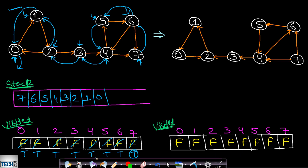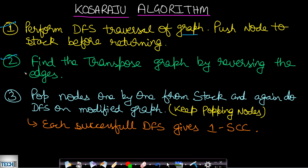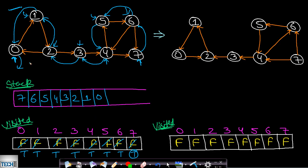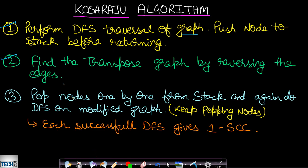The second step is to find the transpose of the graph by reversing the direction of each and every edge. After reversing, we also reset the entire visited array to false so that we can reuse it in the third step.